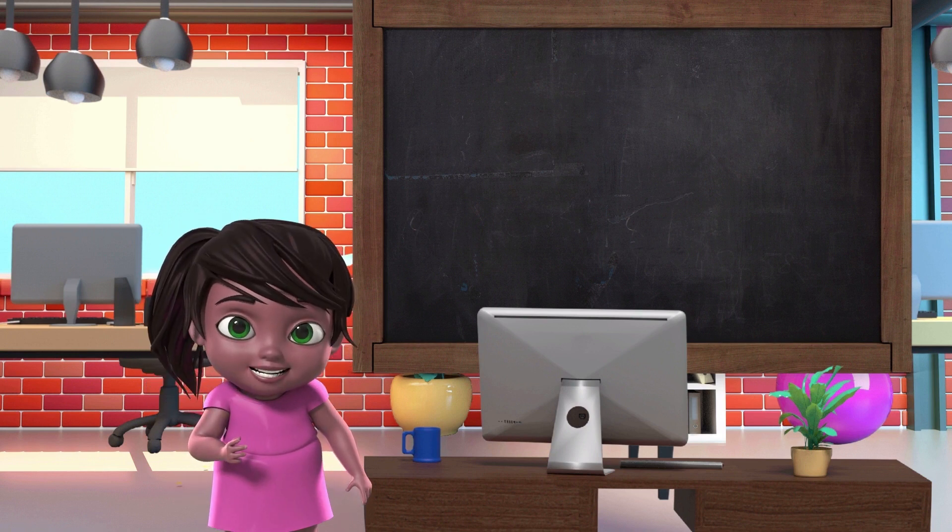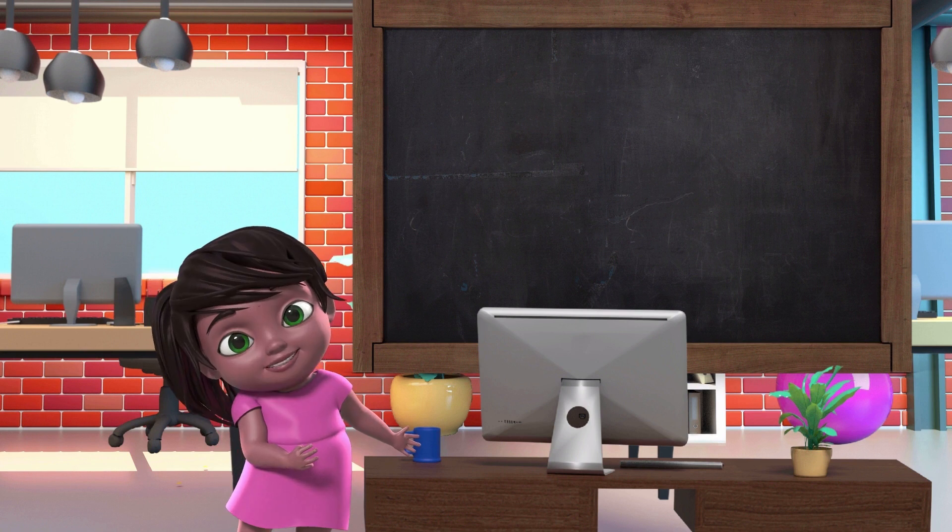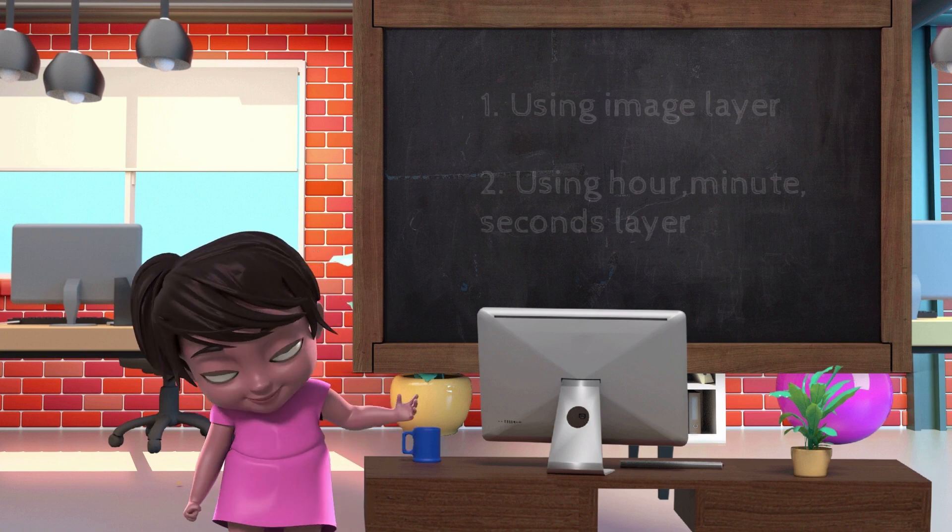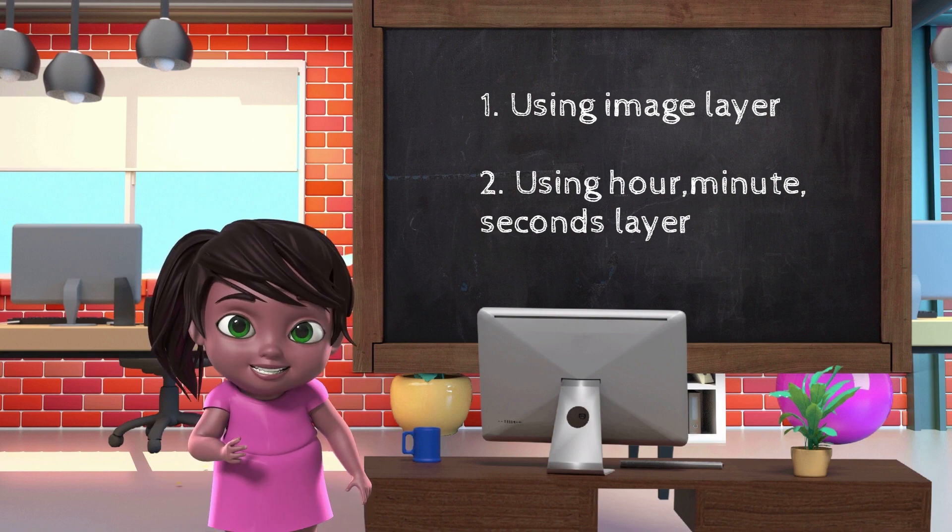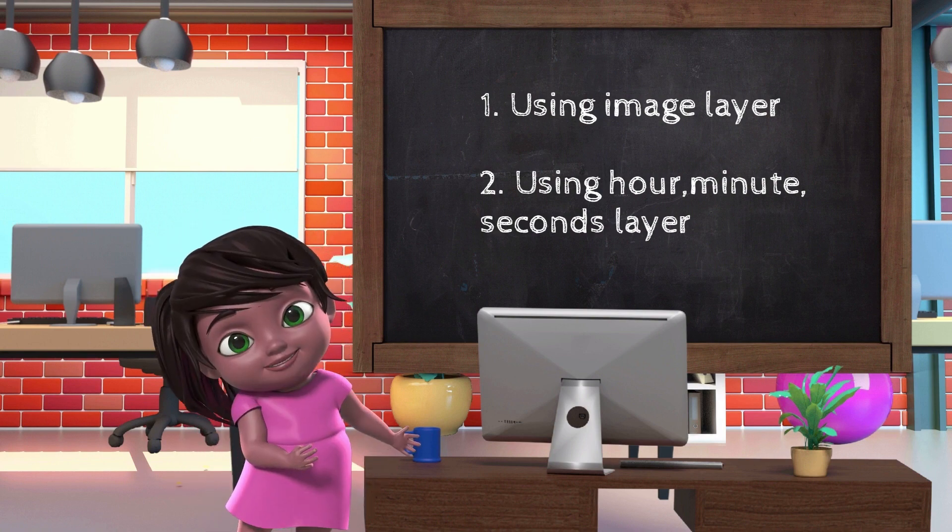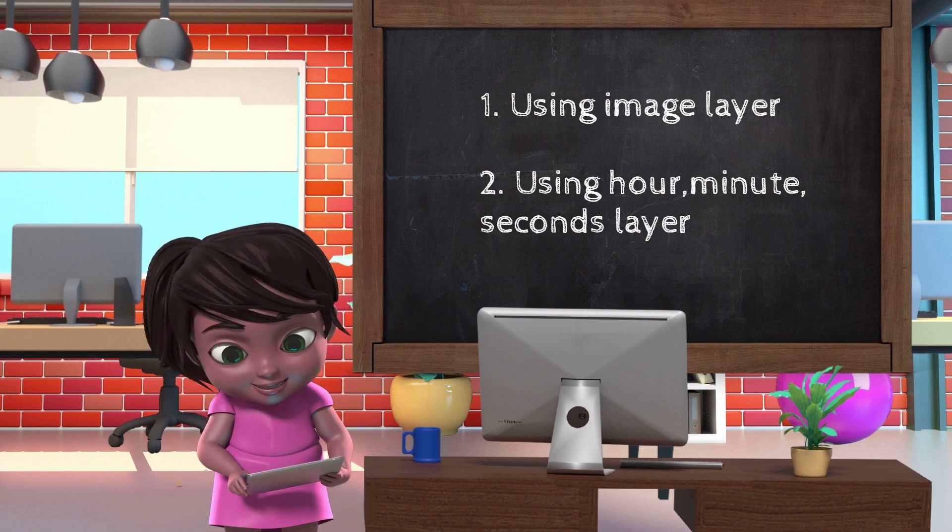There are different ways to make an element or object move, but the basic ways are number one, making an image rotate, and number two, using the hour, minute and seconds hand. Let me show you how they are set up in different ways.